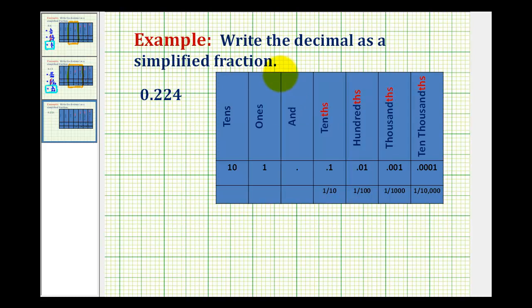So because we have three digits to the right of the decimal, looking at our place value chart, we're going to have two hundred twenty-four thousandths. So we'll have two hundred twenty-four over one thousand. But again, we have to simplify this.